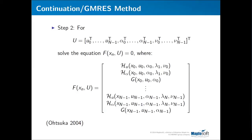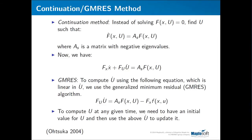In the second step, we put all remaining variables together in a vector called capital U, which includes the inputs, the slack variables, and the Lagrange multipliers nu for time steps 0 to N minus 1. We can then write the remaining optimality conditions as a function F of the current state and capital U, equal to zero. We need to solve for capital U using F equals zero. The problem is that F is a nonlinear function and cannot be solved easily in general. This is where the CGM-res method comes in: instead of solving F equals zero, we find U such that F-dot equals A_s times F, where A_s is a constant matrix with negative eigenvalues.